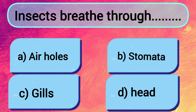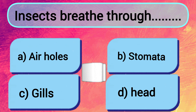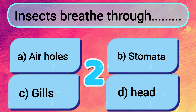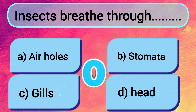Insects breathe through: A: Air holes. B: Stomata. C: Gills. D: Head. The answer is A — air holes.